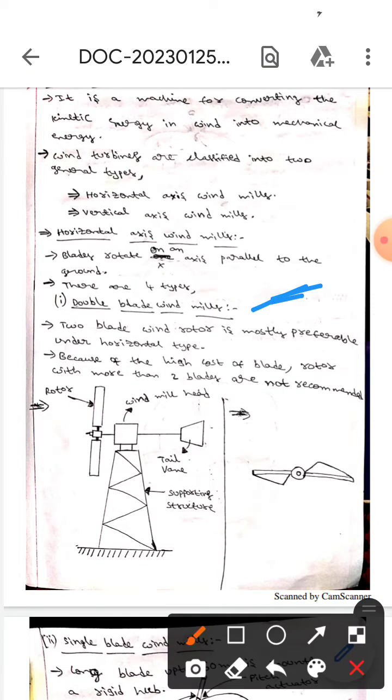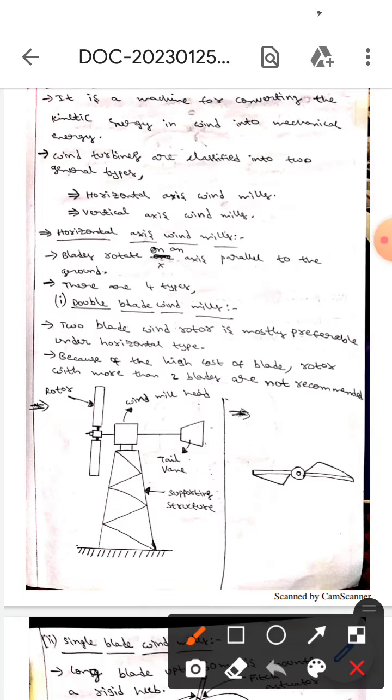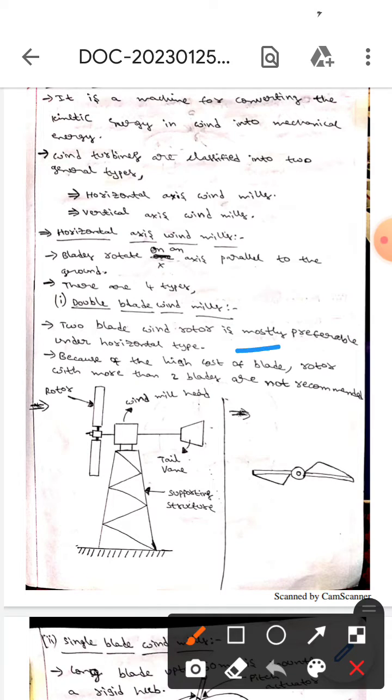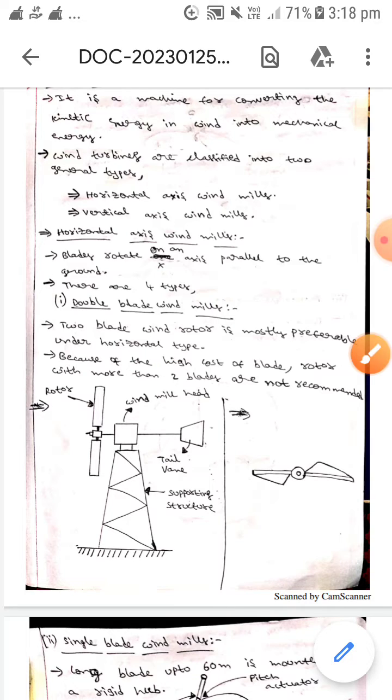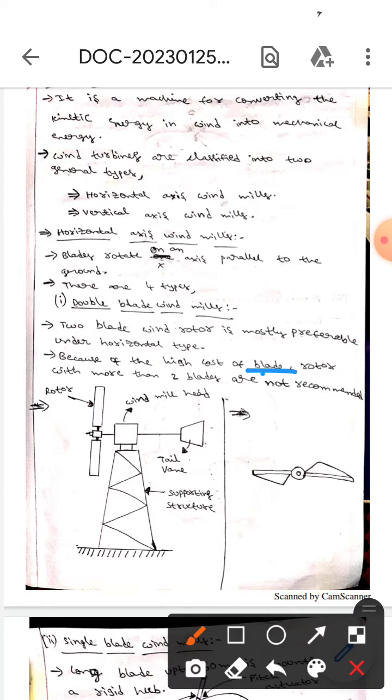The first one is double blade windmills. This diagram represents the double blade windmills. The two blades of wind rotor is most preferable under horizontal type because of its high cost. Blade rotors with more than two blades are not recommended.